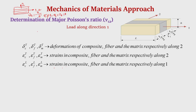So nu_12 is the ratio of transverse strain epsilon_2 to epsilon_1 when only sigma_1 is applied along direction 1 and all other stresses are zero. Similarly, if the lamina is loaded along direction 2, because of the Poisson's effect there will be deformation along 1. In this case only sigma_2 is applied and other stresses sigma_1 and tau_12 are zero. The Poisson's ratio nu_21 is defined as the ratio of epsilon_1 to epsilon_2.